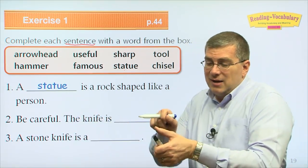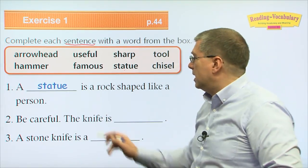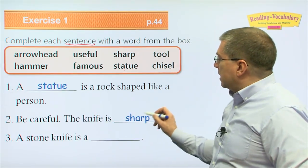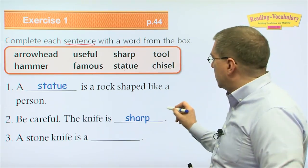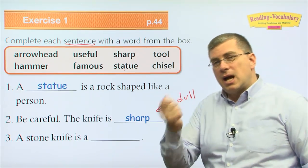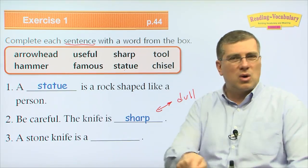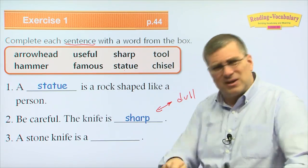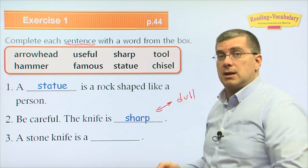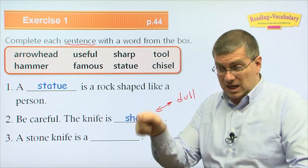Number two: be careful — the knife is blank. If the knife is this, it can cut your skin very easily. The knife is sharp. The opposite of sharp is dull — a dull knife won't cut your skin or tomatoes or meat easily. You need to sharpen it. But be careful: the knife is sharp and can cut your skin.